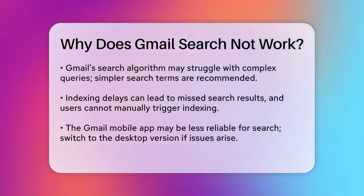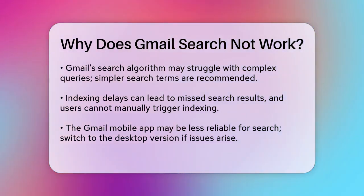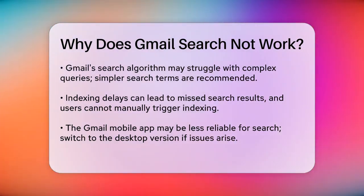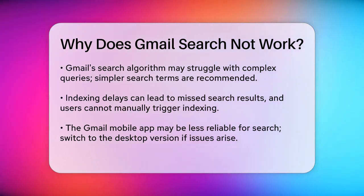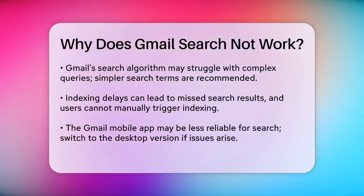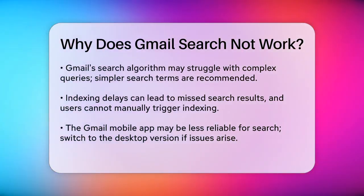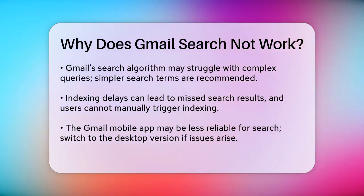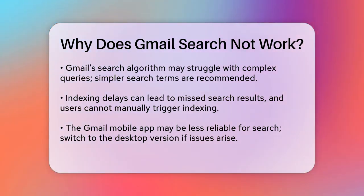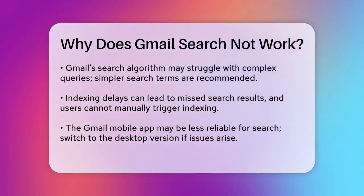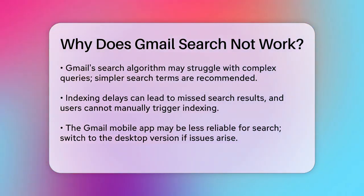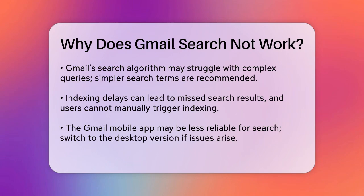Sometimes Gmail's search prioritizes labels over email content, which can be frustrating if you're trying to find specific emails based on their content rather than labels. Using the advanced search option can help you set specific criteria to narrow down your search results.